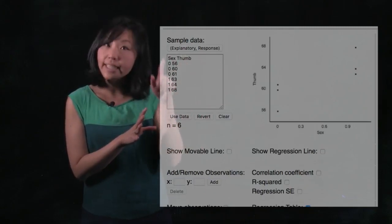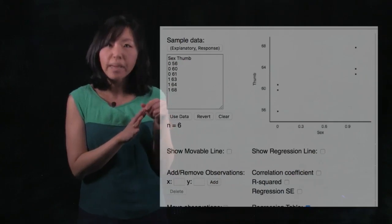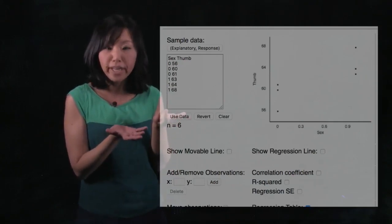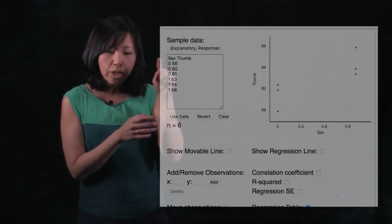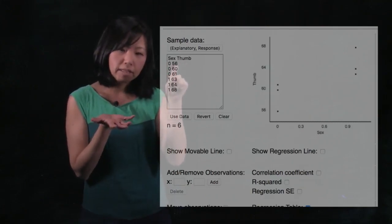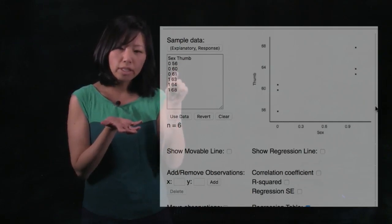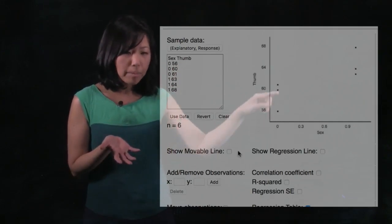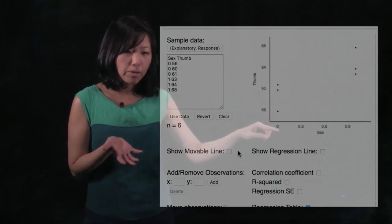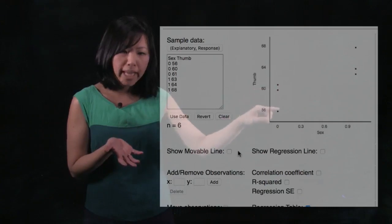And now we've added in sex and we've coded it just like we would code it in our GLM to fit with our linear model that we've created for sex model. And so you could see that for this person, who's a female, they have a thumb length of 56 millimeters. For this person who's female, she has a thumb length of 60. And those data points appear here. So above the zero, that's the females, they're all lined up right here, you could see their thumb lengths.